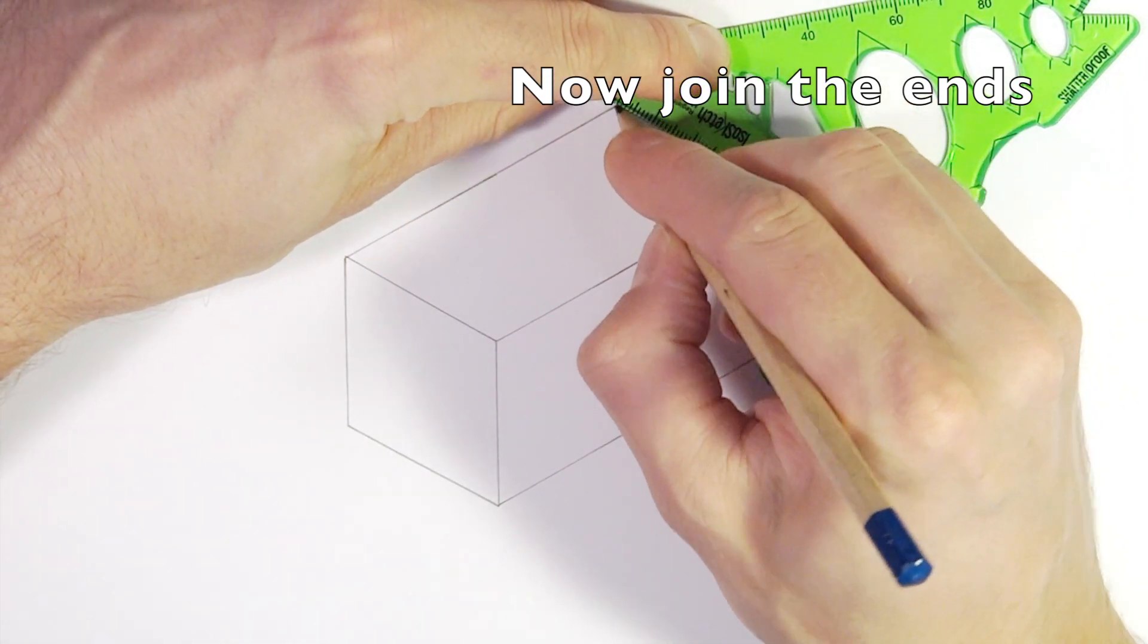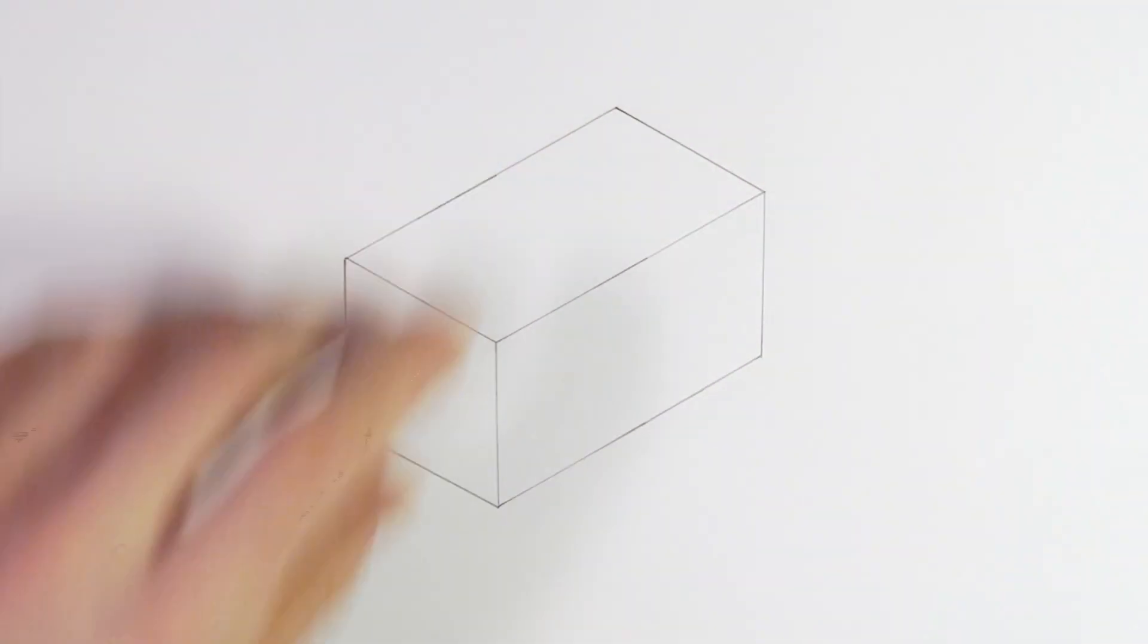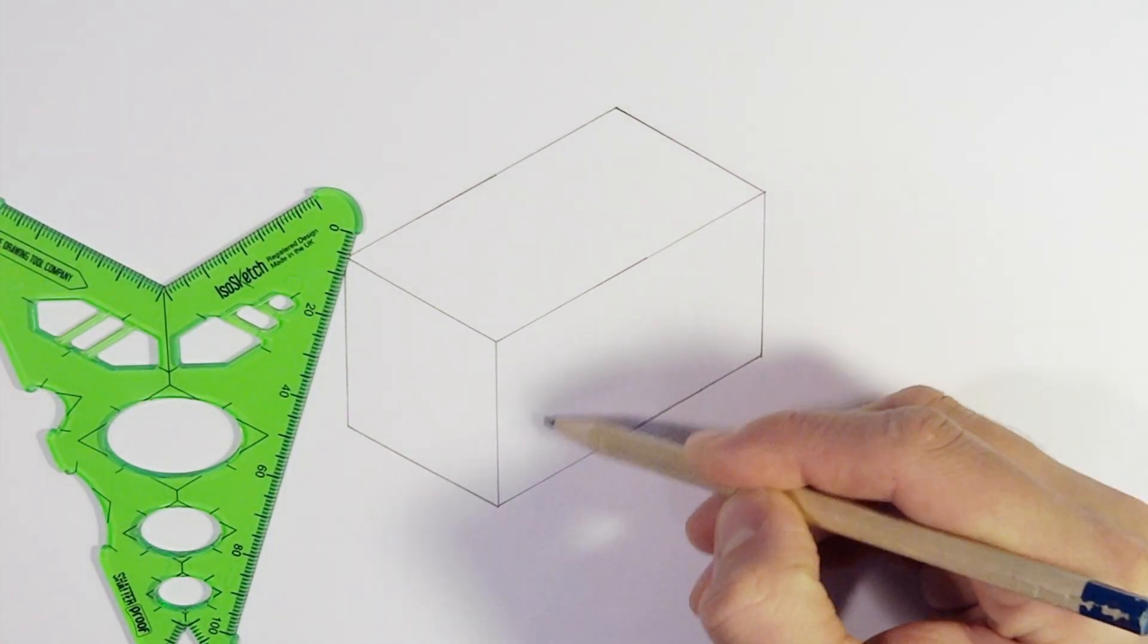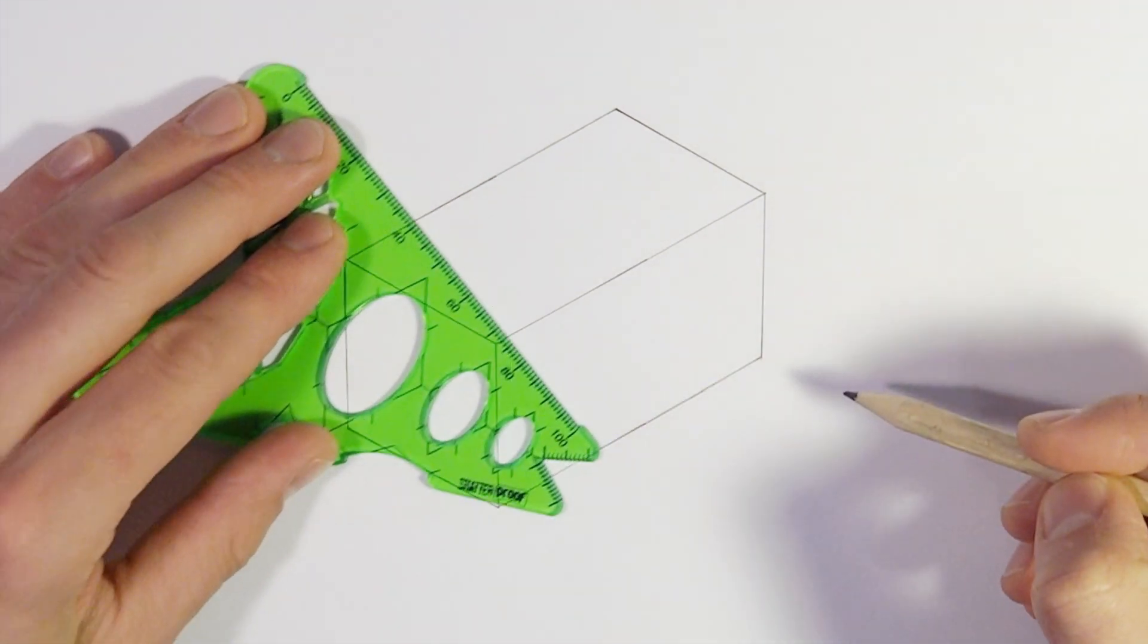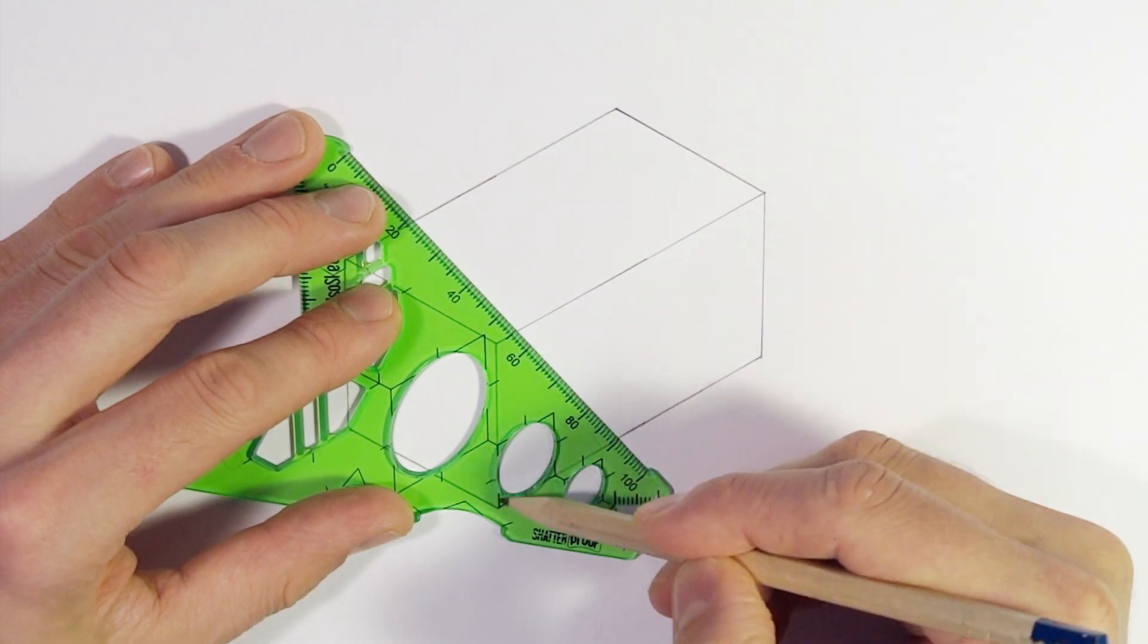We're just using the ISO sketch tool and using all of the advantages of having an isometric stencil ready to hand. Next stage then is to mark out some wheels. We're going to use the middle stencil on ISO sketch.